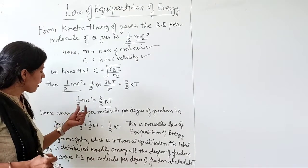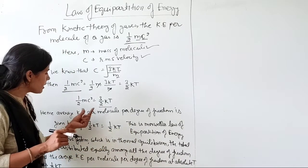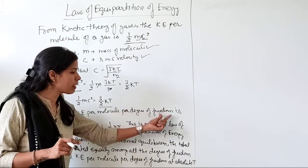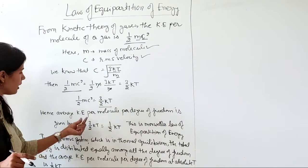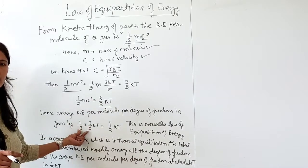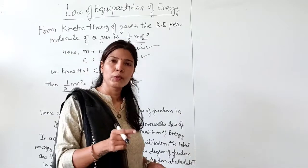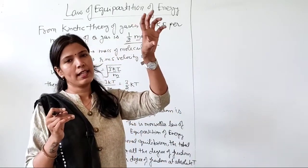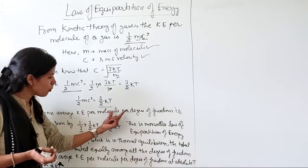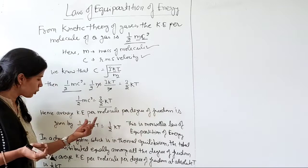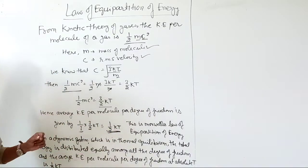Now if I want to find the average kinetic energy per degree of freedom, then kinetic energy per molecule per degree of freedom will be - I will divide the total kinetic energy by 3, because 3 is the degree of freedom in case of translatory motion. So the kinetic energy per molecule per degree of freedom that we get is half kT.